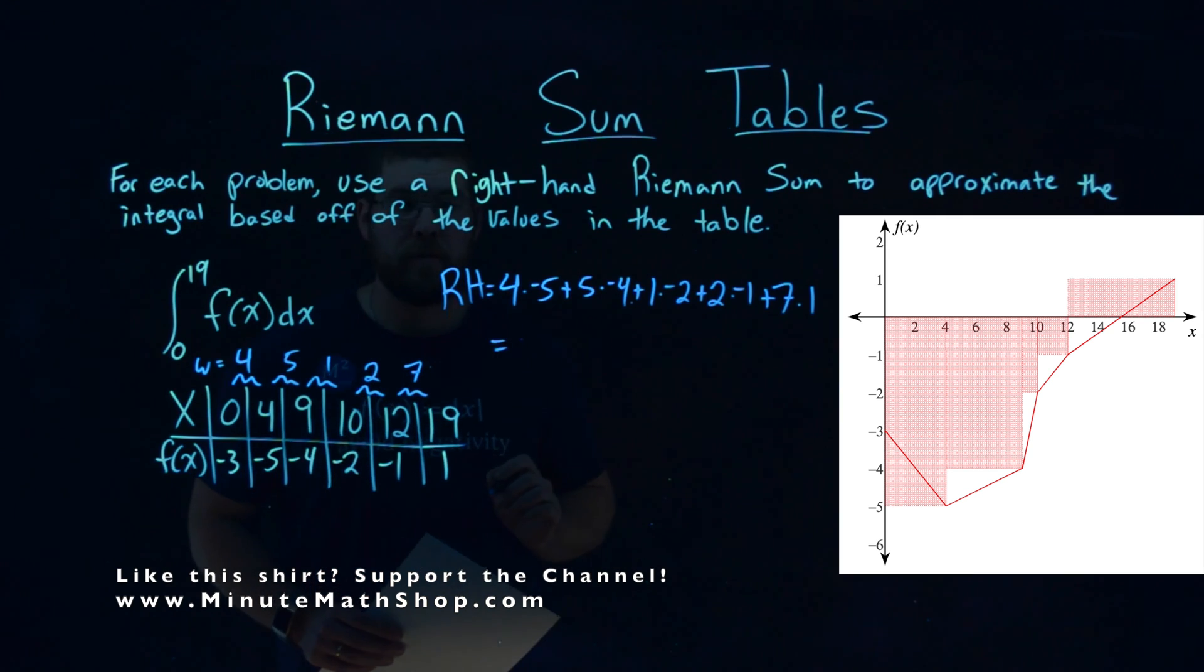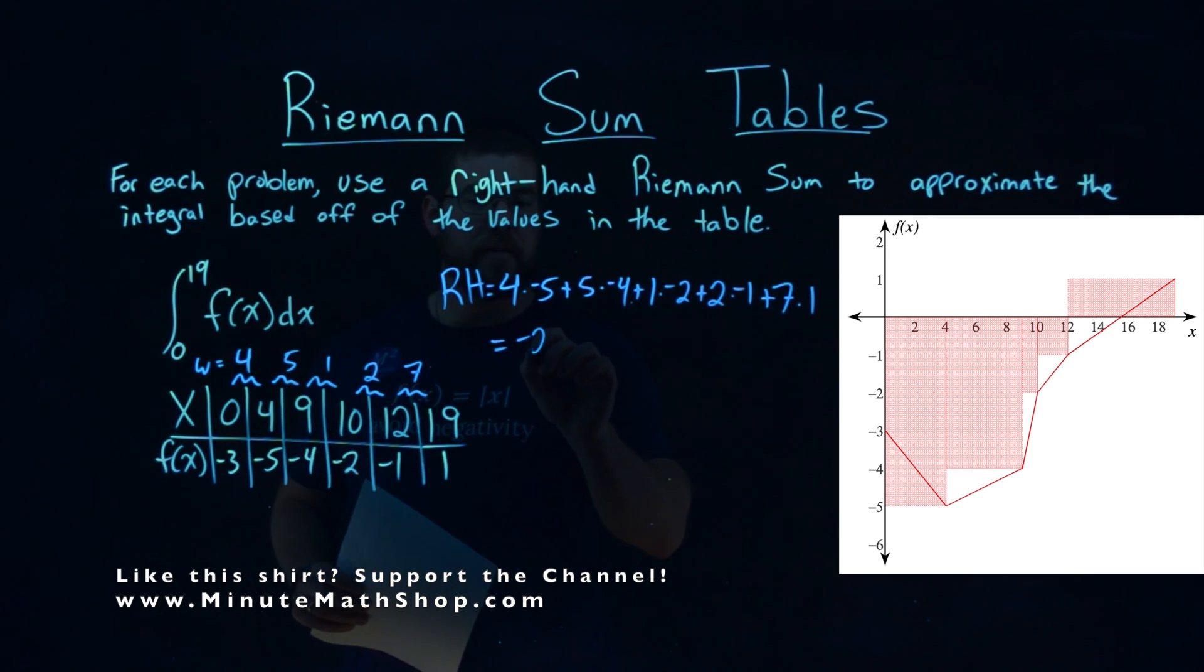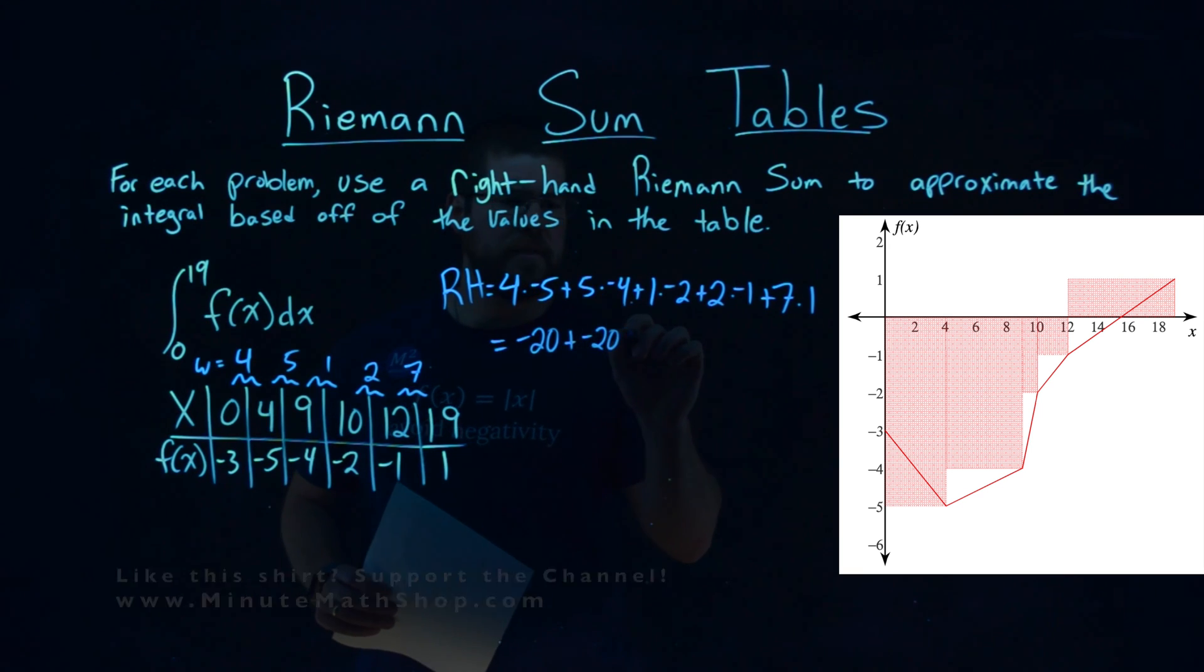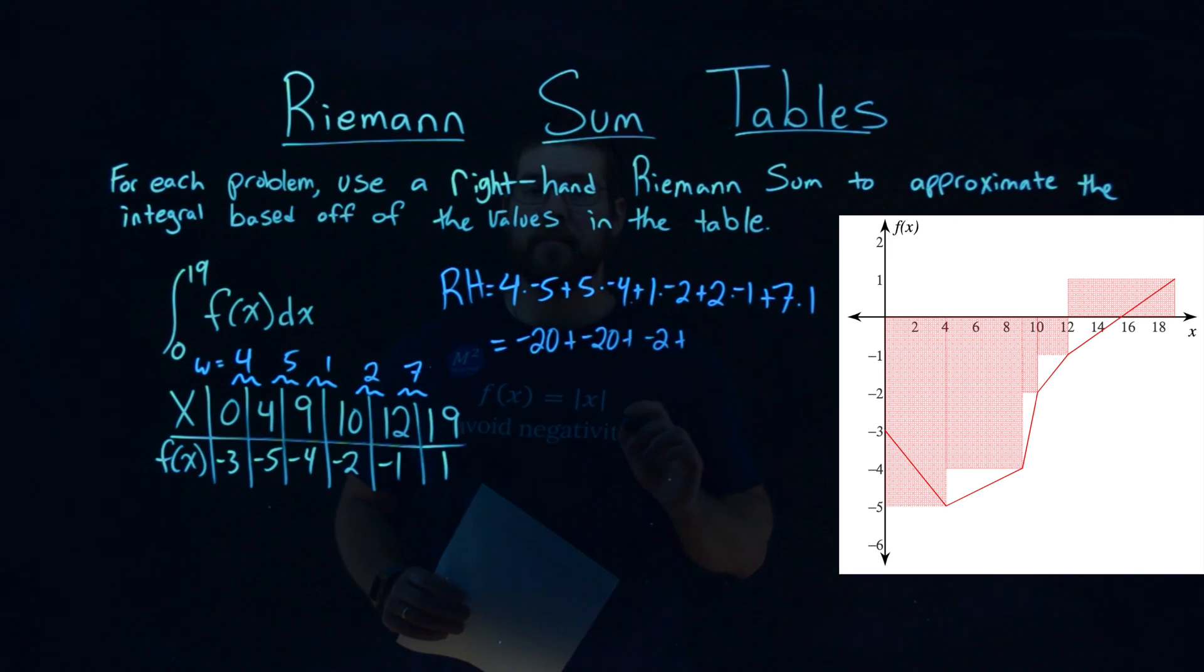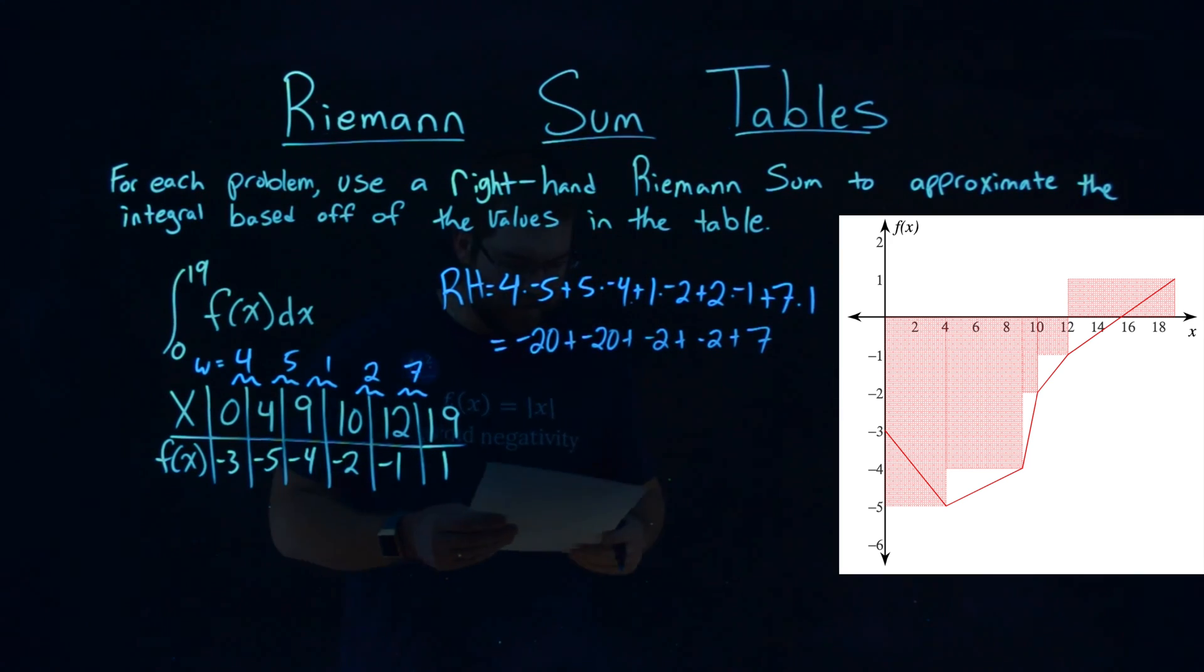So let's go simplify this out. 4 times negative 5 is negative 20, 5 times negative 4 is also negative 20, 1 times negative 2, negative 2, 2 times negative 1, negative 2 again, and 7 times 1 is 7.